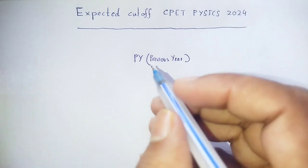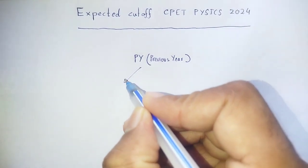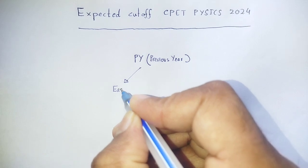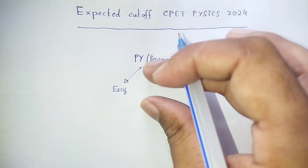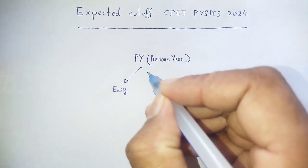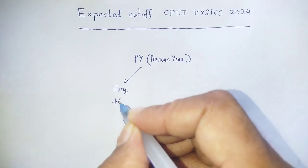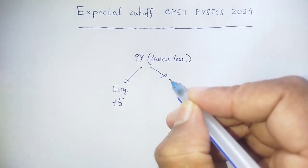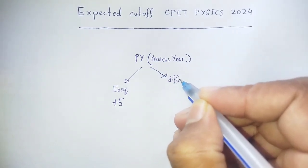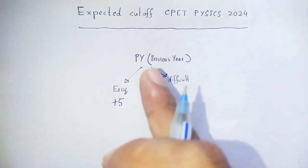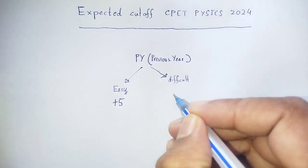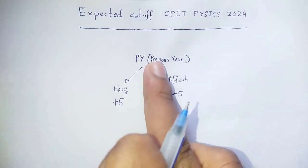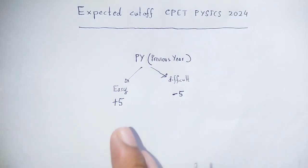The first rule is that if the question paper is easy, you add marks to the previous year's cutoff marks. If the questions are difficult, then you subtract five marks from the previous year's cutoff marks. This is the thumb rule for estimating the expected cutoff.